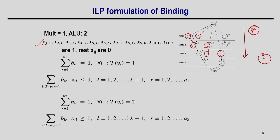From scheduling: X11=1 (op1 at ts1), X21=1 (op2 at ts1), X32=1 (op3 at ts2), X43=1 (op4 at ts3). For each operation there are 4 Boolean XIL variables, only one is 1. For op1: X11=1, X12=0, X13=0, X14=0. Similarly for each operation. These are constants given by the completed schedule.